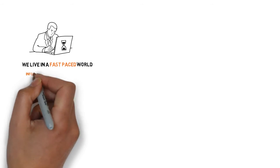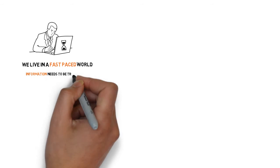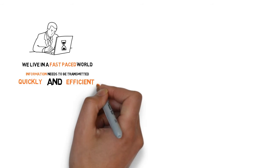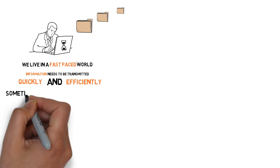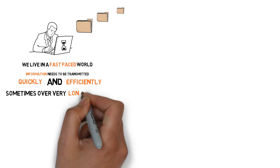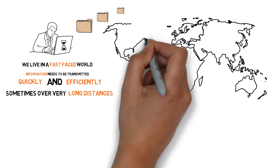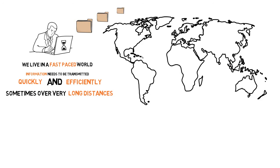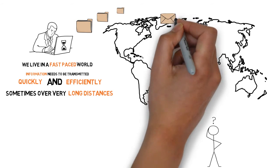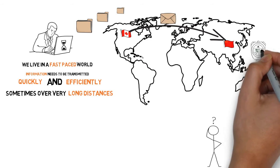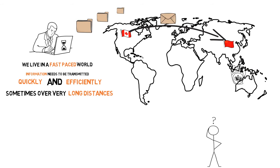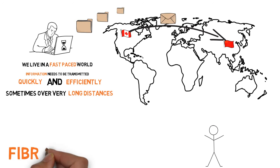We live in a demanding, fast-paced world where dense data needs to be transmitted quickly and efficiently in order for us to reach our goals. Sometimes this needs to be done over very long distances. So, have you ever wondered how it is possible to send an email from Canada to China in record time? The answer is light — more specifically, fiber optics.